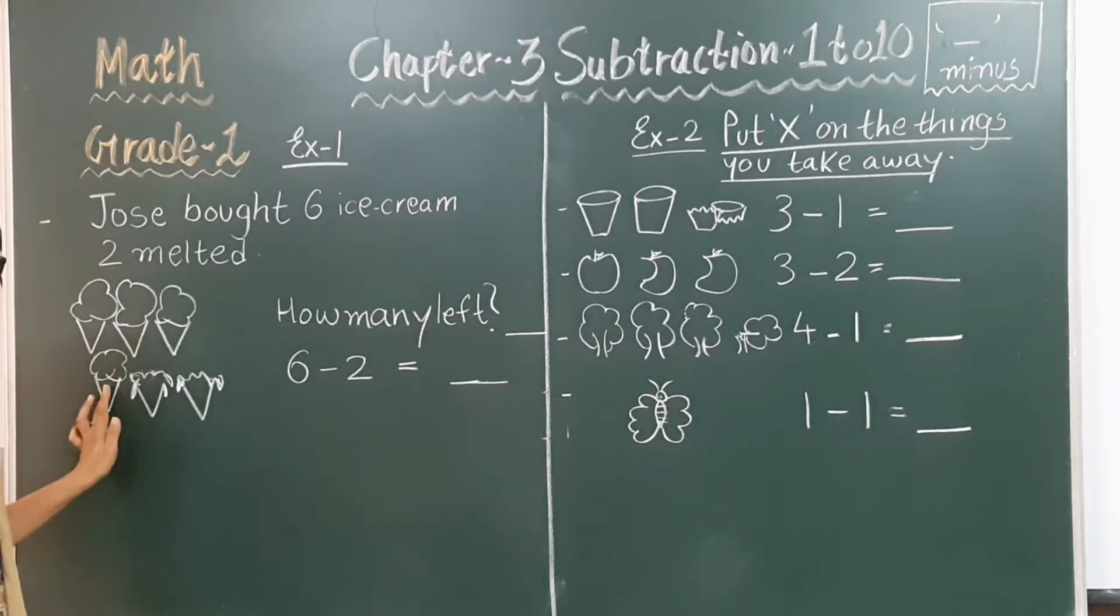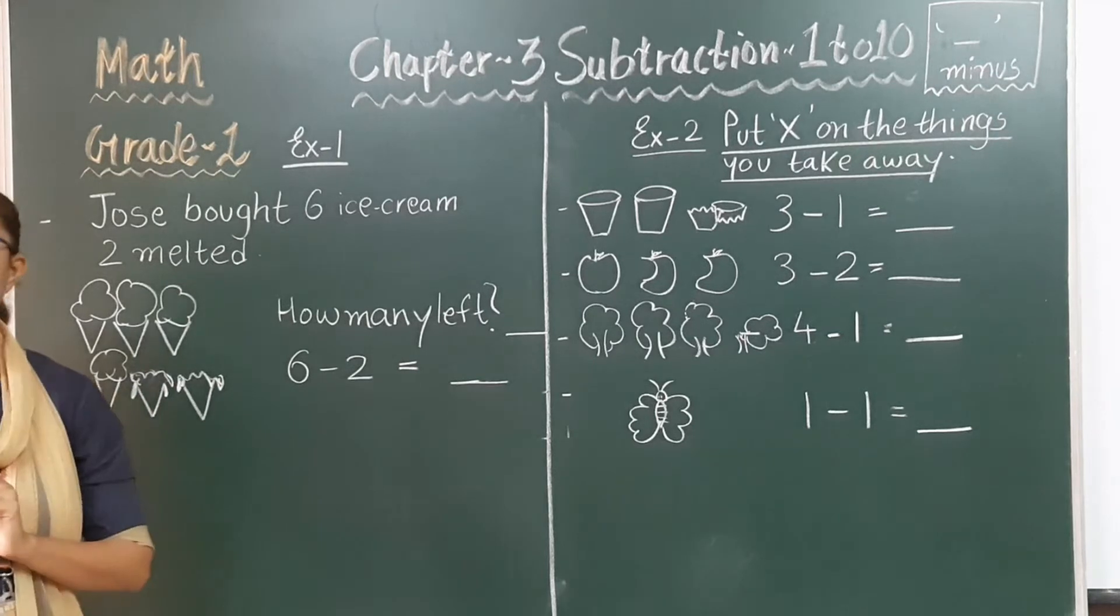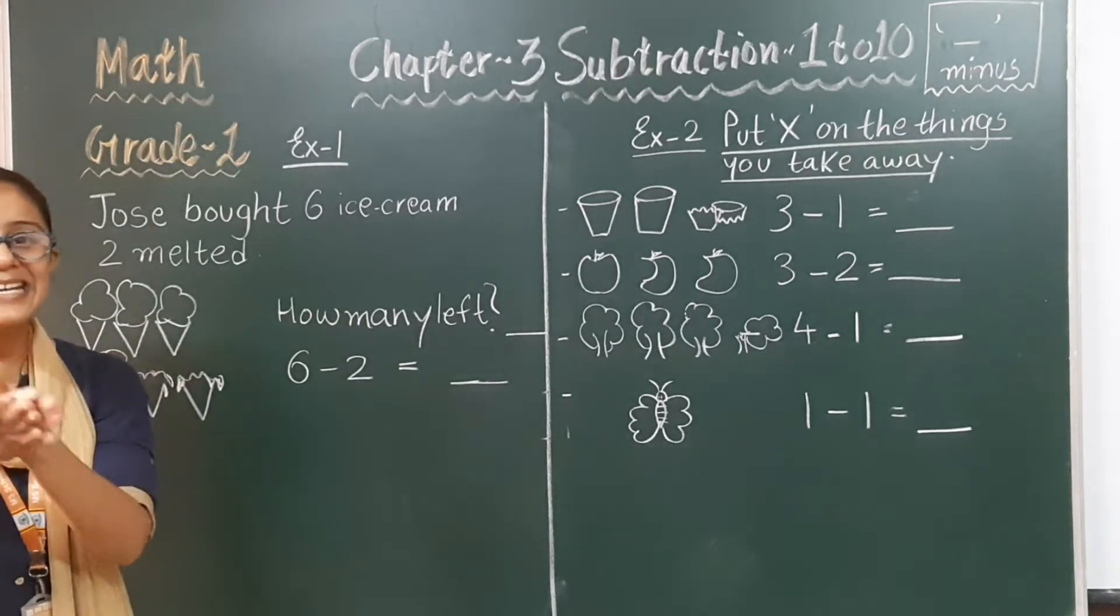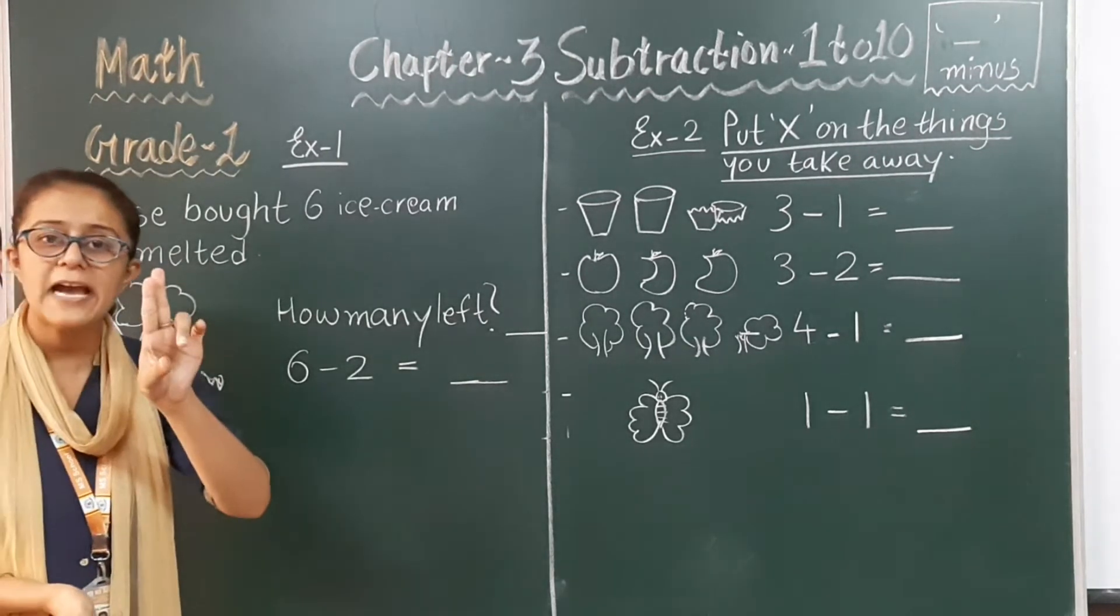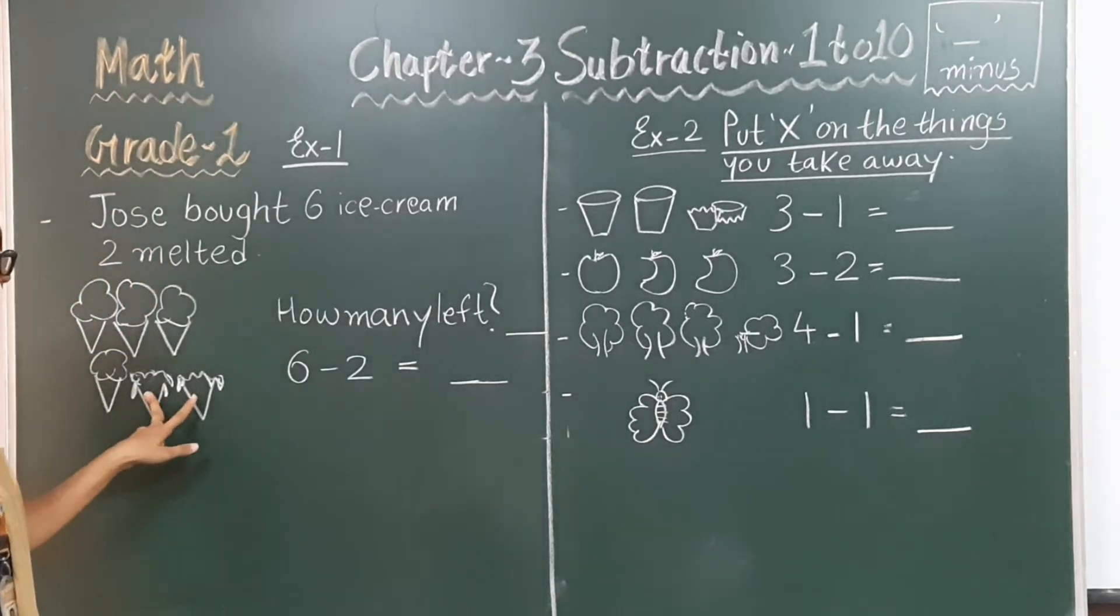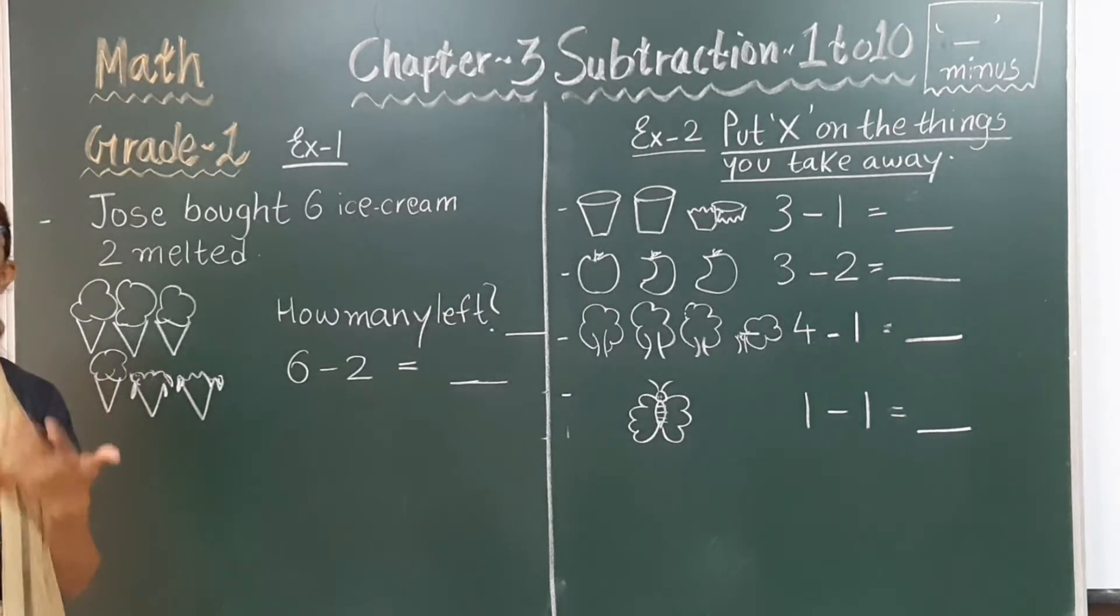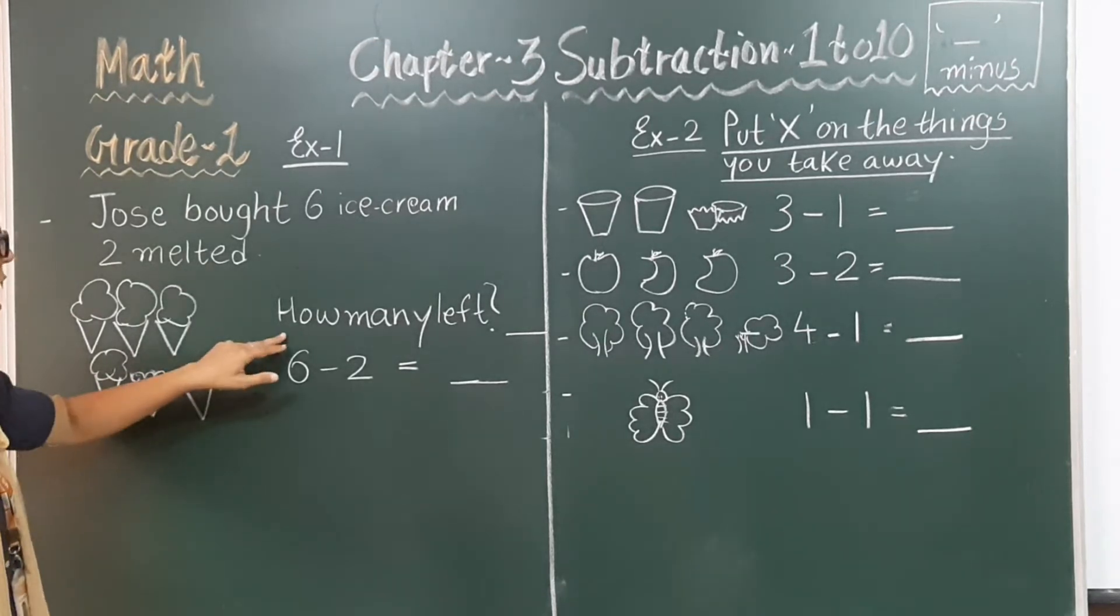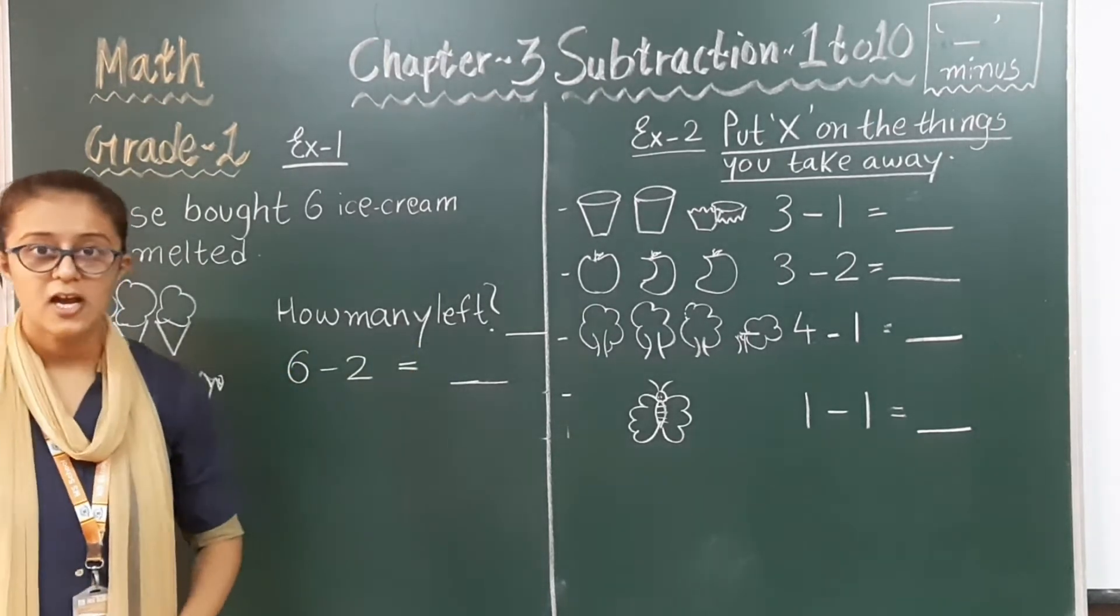Now, Jose is a boy who bought total how many ice creams? One, two, three, four, five and six. But from that six ice creams, two ice creams melted. These two ice creams were melted. Now, how many left?